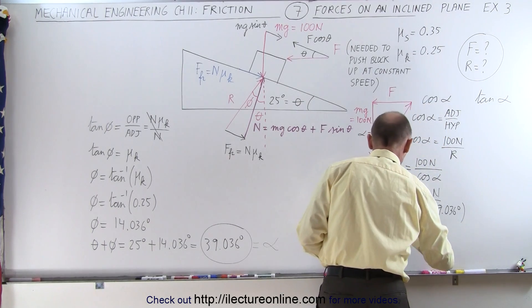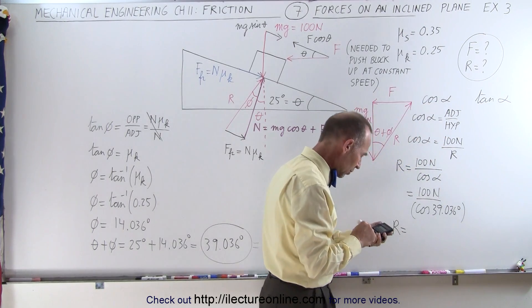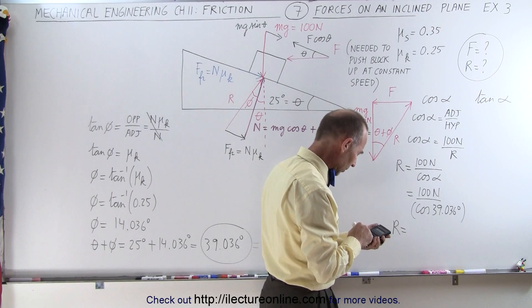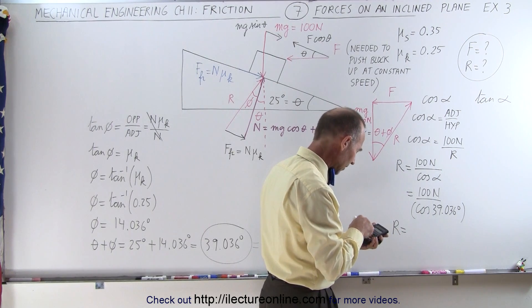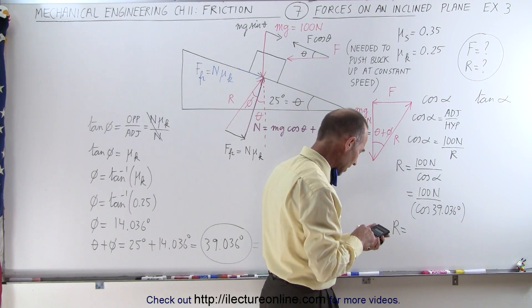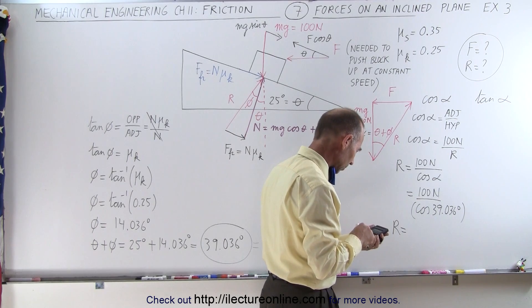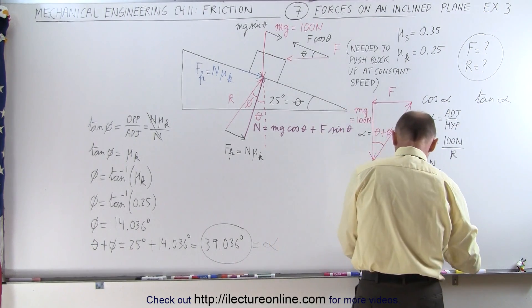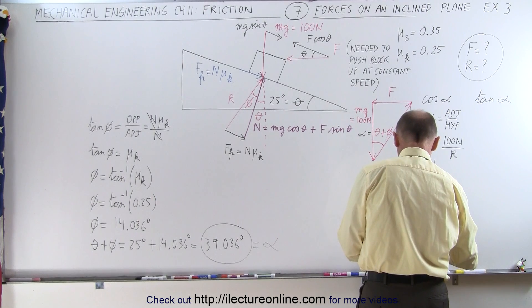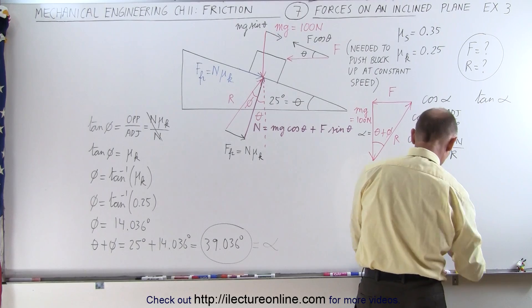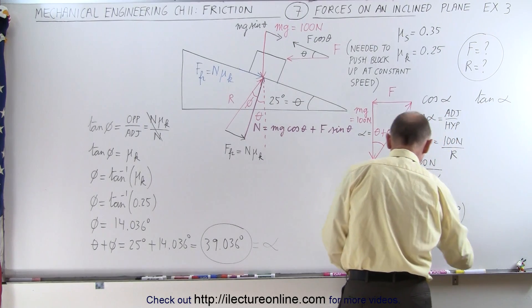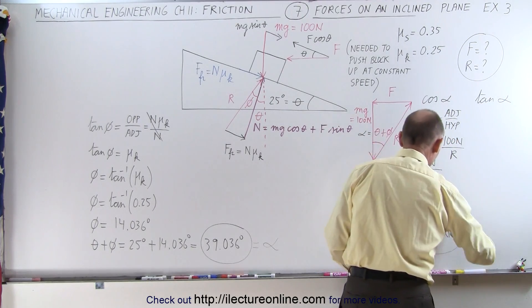Taking the cosine of 39.036 degrees and dividing 100 newtons by that result, the reaction force R equals 128.7 newtons.